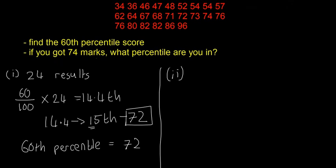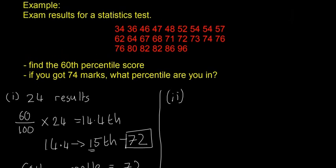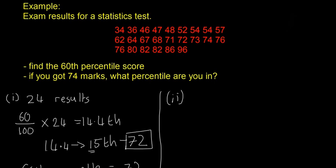Next we'll do part two. So if you've got 74 marks, then what percentile are you in? So what you do is you write 74 down, and then count how many people got less.